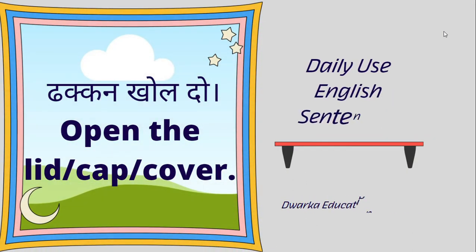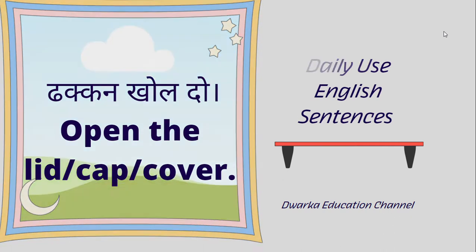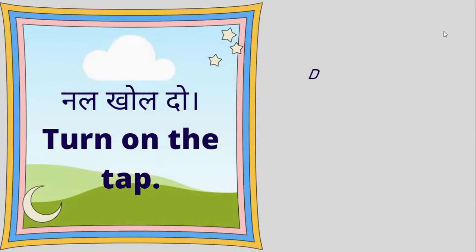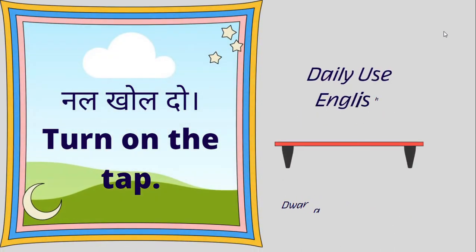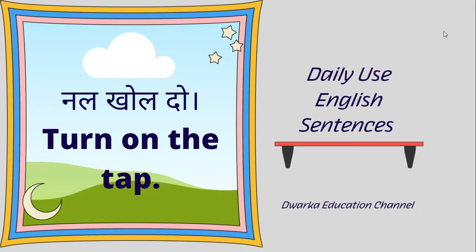Duggan khol do — Open the lid, or open the cap, or open the cover. Null khol do — Turn on the tap.